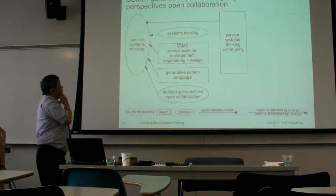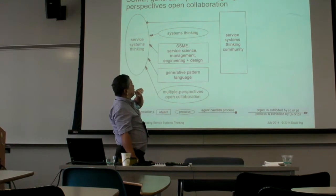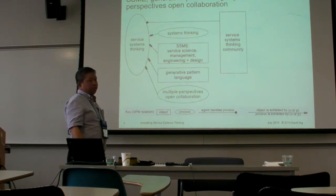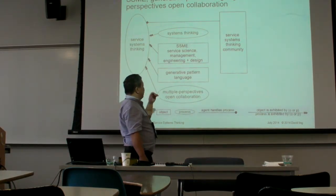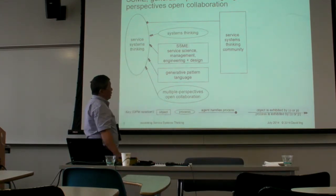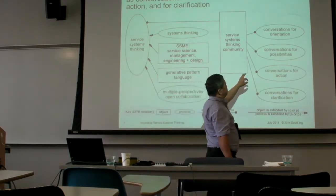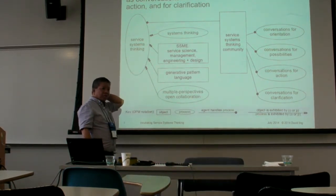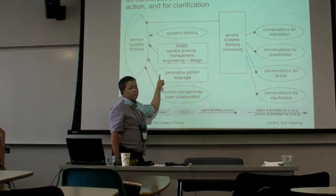Service system thinking exhibits four things: firstly, systems thinking; secondly, the service science, management, engineering, and design — which was started around 2003 when Jim Sporer was visiting the ISSS at Crete and generated a pattern language out of the Christopher Alexander work; thirdly, multiple perspectives open collaboration; and fourthly, the conversation approach we're using today. I already covered the conversation for orientation, which covered all the history of these four things. Now I'm going to switch over to the conversation for possibilities and focus on each one, starting with the most concrete.